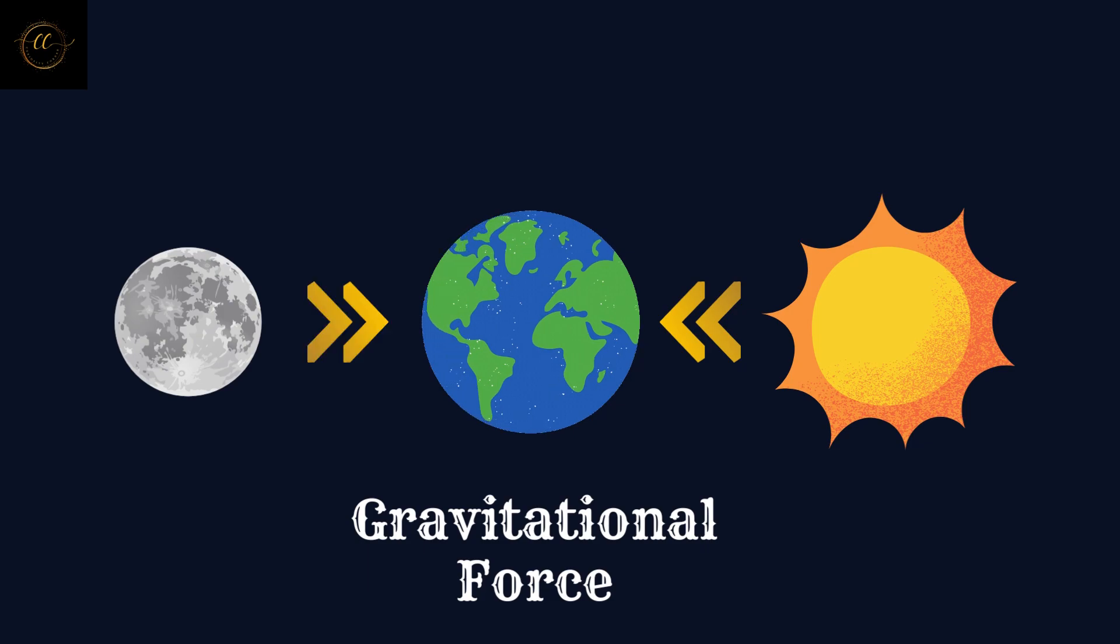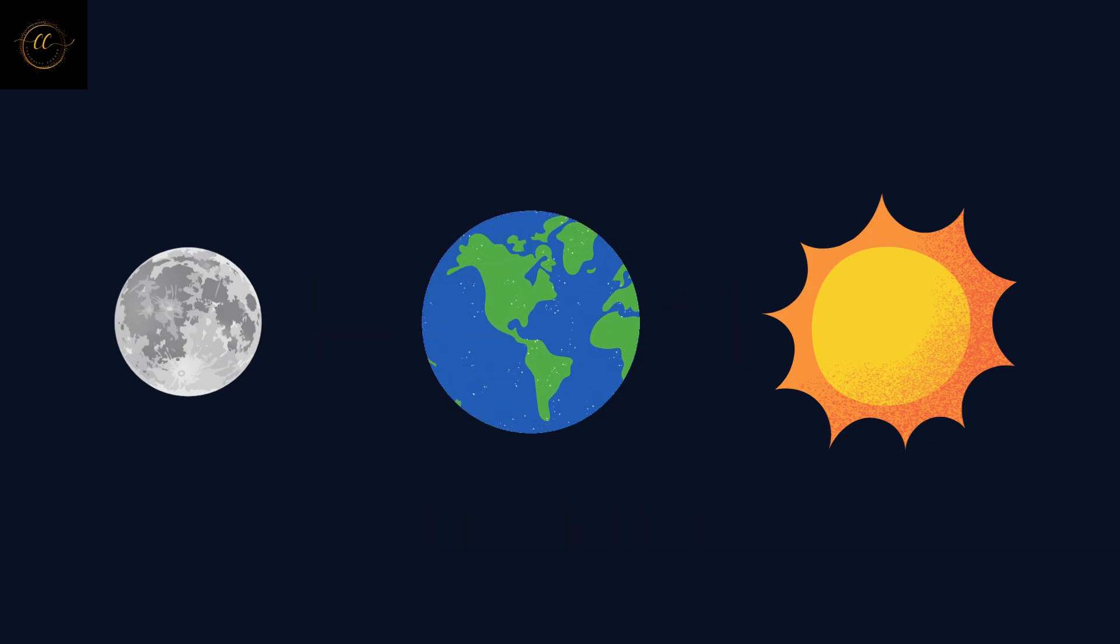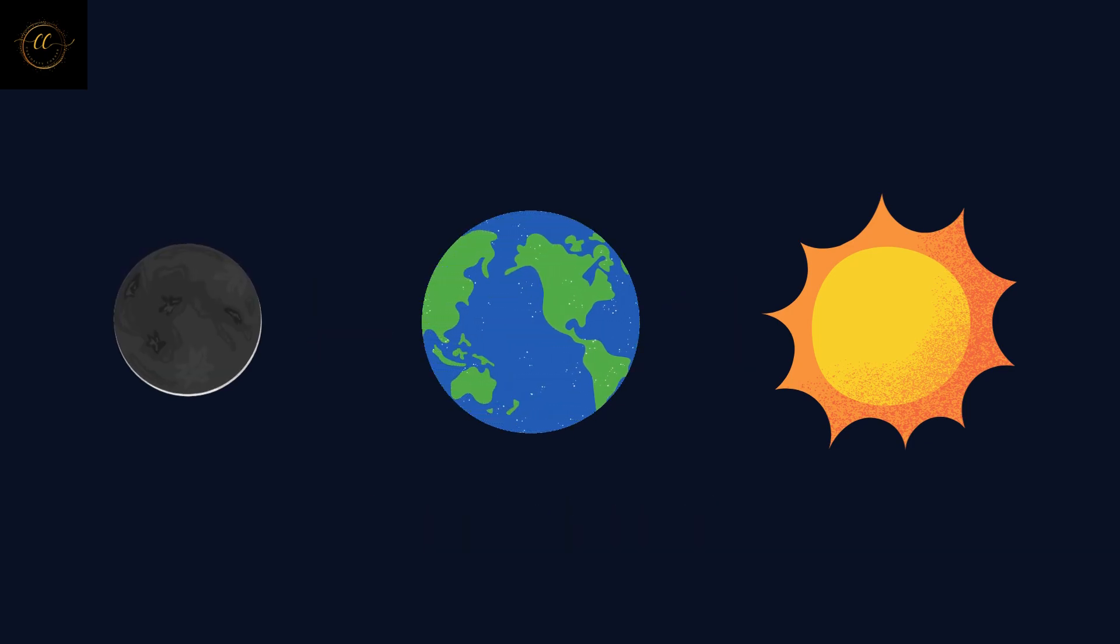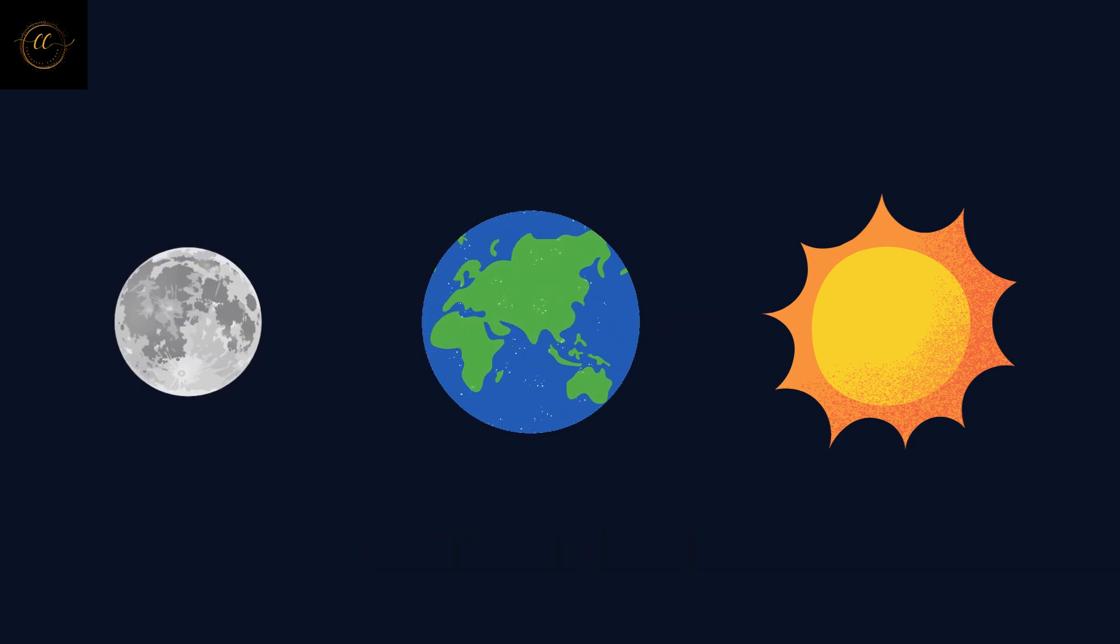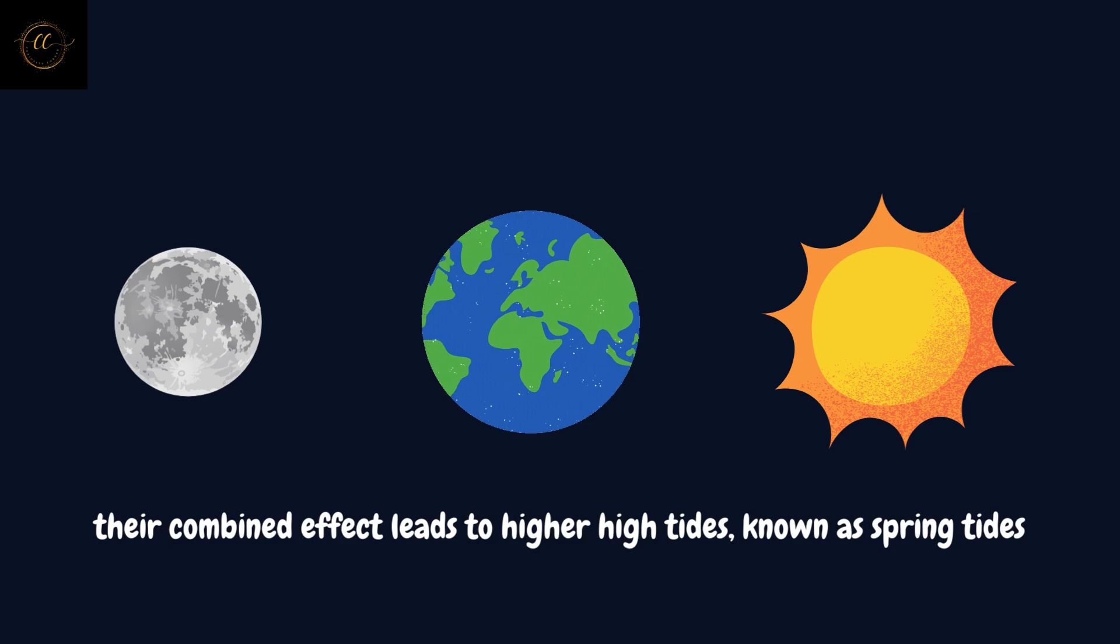When the gravitational forces of the sun and the moon align, during full moon and new moon phases, where the earth, sun, and moon are almost in a straight line, their combined effect leads to higher high tides, known as spring tides.